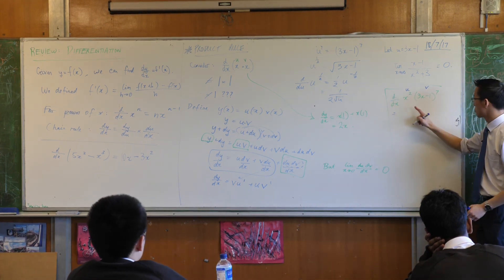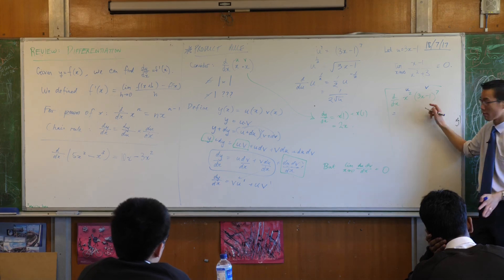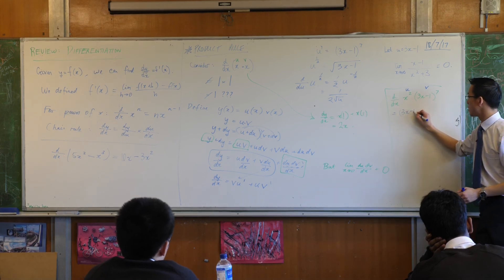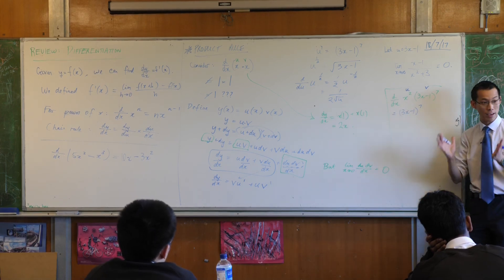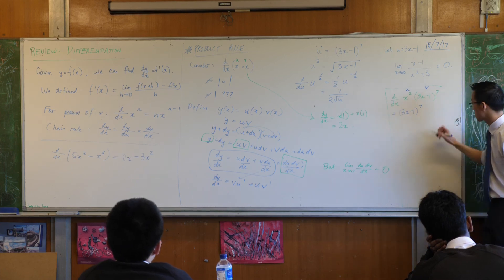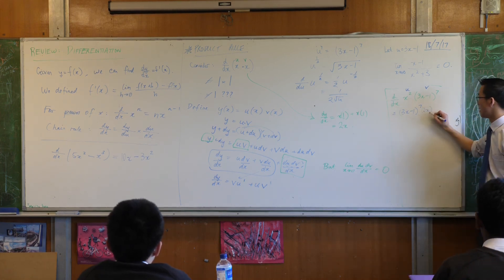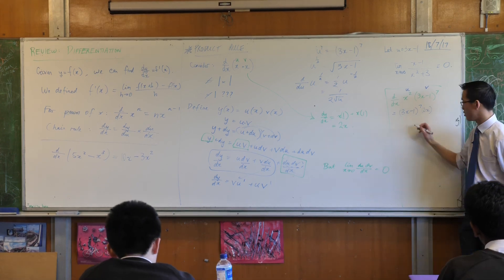v, u dash. Here's v, the whole thing. Right? So it's 3x minus 1 to the 7. That's v. What's u dash in this case? 2x. There's the first half of the product rule. Let's do the second half.